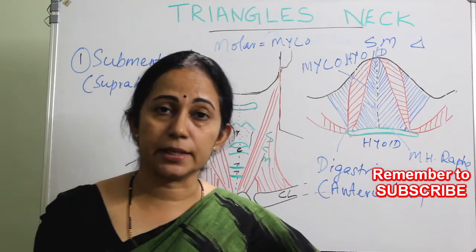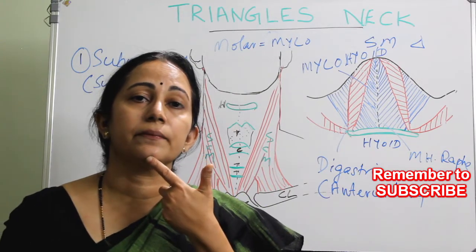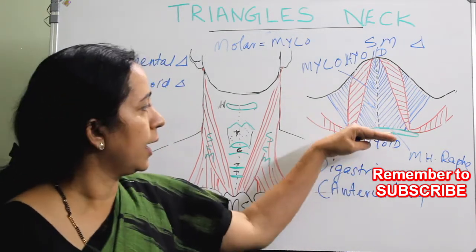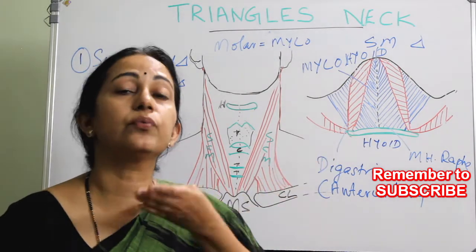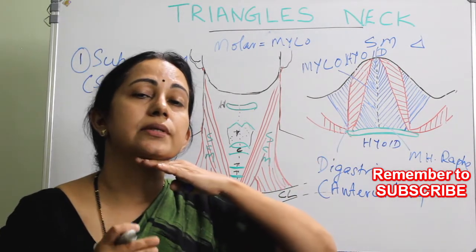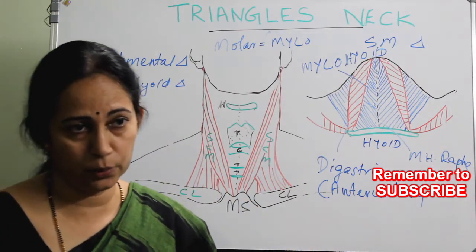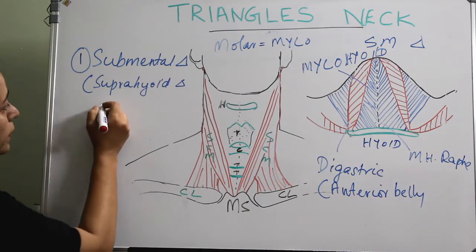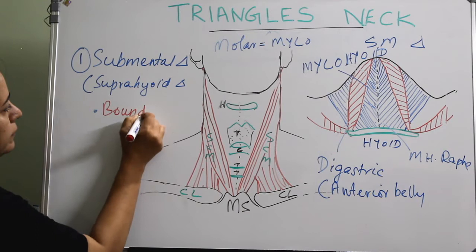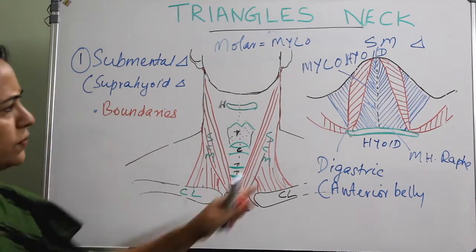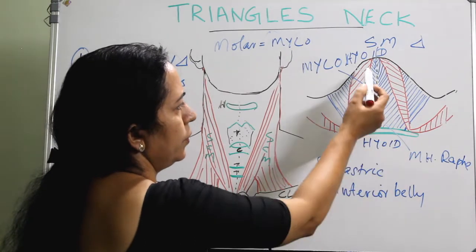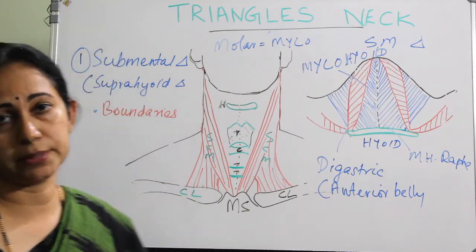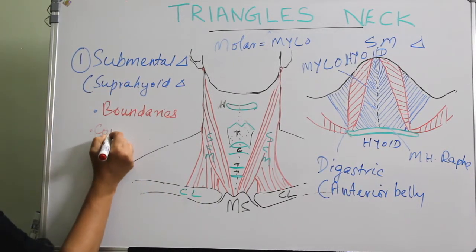To summarize the submental triangle: the apex is formed by the chin, on both sides are the anterior bellies of the digastric muscle, the hyoid bone forms the base below, and the floor is formed by the mylohyoid muscle. Now let us look at the contents of this triangle.